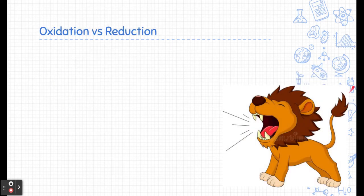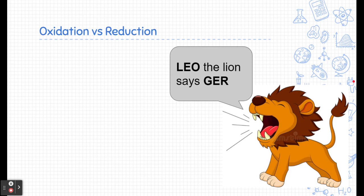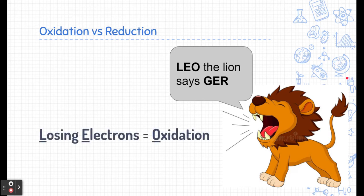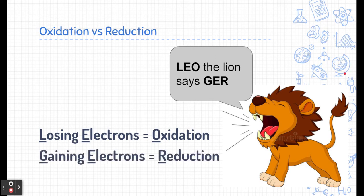Here's a little saying I want you to remember. Leo the lion says ger. This is going to help you remember which is which in terms of reduction and oxidation. Losing electrons is oxidation. Gaining electrons is reduction. Both of them are transferring electrons, which is the whole point of a redox reaction.